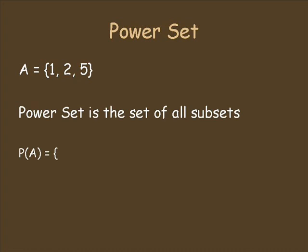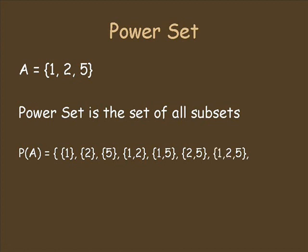In this case, we can have three singleton subsets — 1, 2, and 5 — three subsets of size 2: {1,2}, {1,5}, and {2,5}, and two more subsets which we see for every set: the set itself, and the empty set. Notice the original set had size 3, while the power set has size 8.